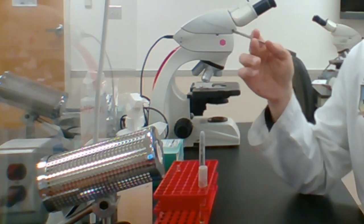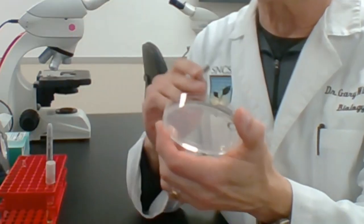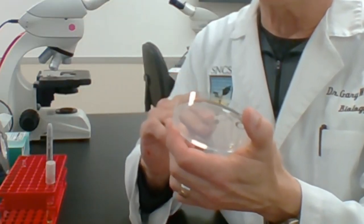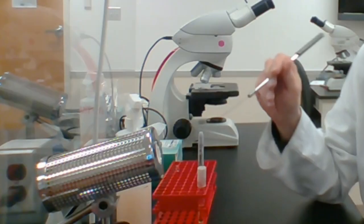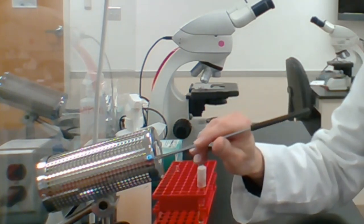During this time, the transfer tool with bacteria is held away from any contaminating surfaces. Then the lid of the plate is removed and the transfer tool is used to streak the inoculum onto the sterile agar plate. Once done, the lid is replaced and the transfer tool is sterilized.